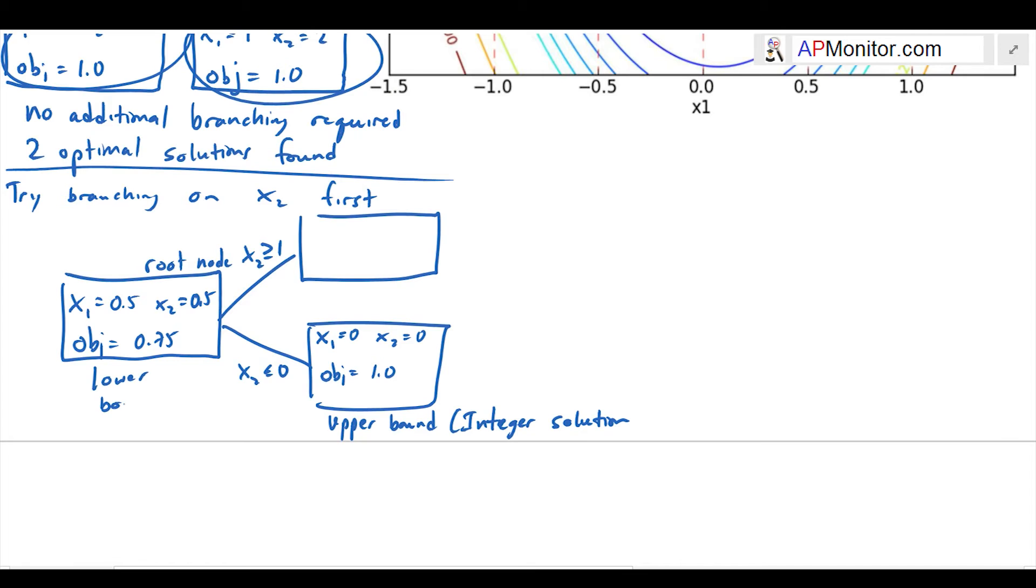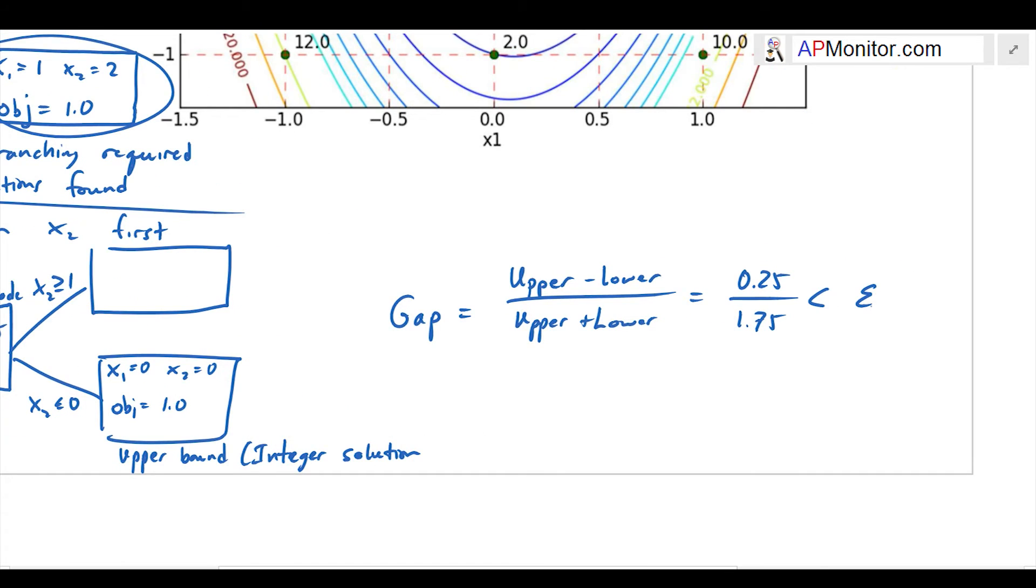The relax solution with the lowest objective is going to be the lower bound. If I have a gap, this is the way the gap is defined. As long as it's less than or equal to tolerance, then we can terminate. That can provide some early termination criteria if we have a very large problem.